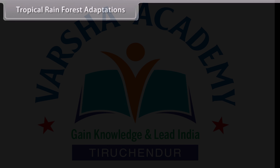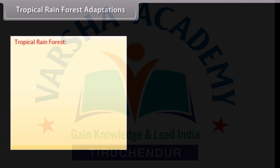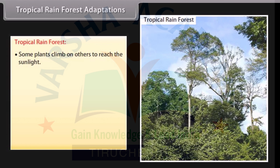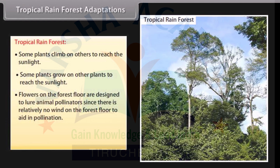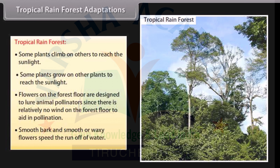Tropical rainforest adaptations: Some plants climb on others to reach the sunlight, and some plants grow on other plants to reach the sunlight. Flowers on the forest floor are designed to lure animal pollinators, since there is relatively no wind on the forest floor to aid in pollination. Smooth bark and smooth or waxy flowers speed the runoff of water.